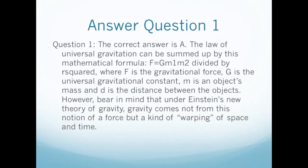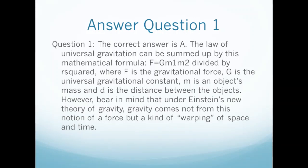Answer to Question 1: The correct answer is A — mass and distance. The law of universal gravitation is summarized by the formula F equals G·M1·M2 divided by R squared, where F is gravitational force, G is the universal gravitational constant, M is an object's mass, and D is the distance between objects. However, bear in mind that under Einstein's theory of gravity, gravity comes not from the notion of a force, but from a warping of space and time.